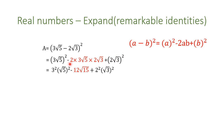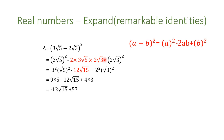We multiply the 2ab term: 2 times 3 times 2, and under the radical we multiply the radicands together. We do the math and calculate, and here is our final answer.